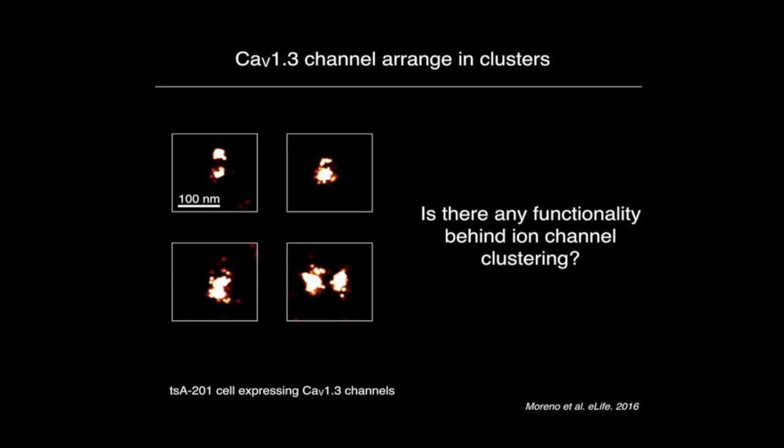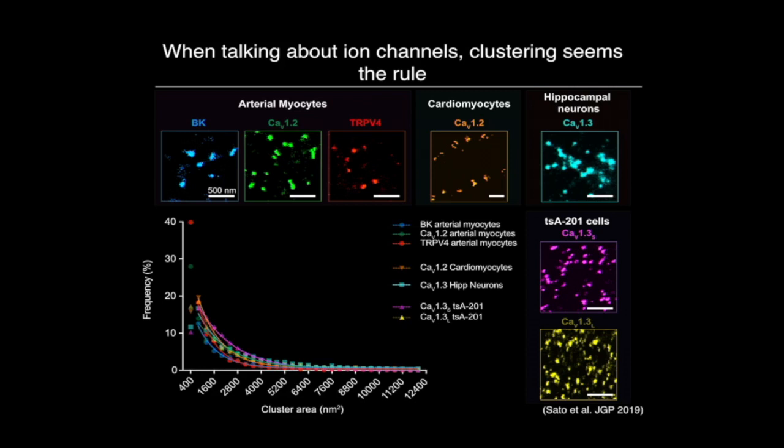We started to study different ion channels, and the more channels we studied, the more it looked like clustering is the rule. We have observed organization in clusters for BK channels, 3B4, and L-type calcium channels, regardless of the cell type, and all of them show a wide range of cluster size.